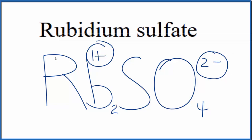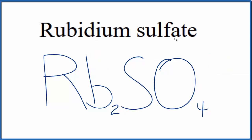So this is the formula for rubidium sulfate, Rb2SO4. This is Dr. B. Thanks for watching.